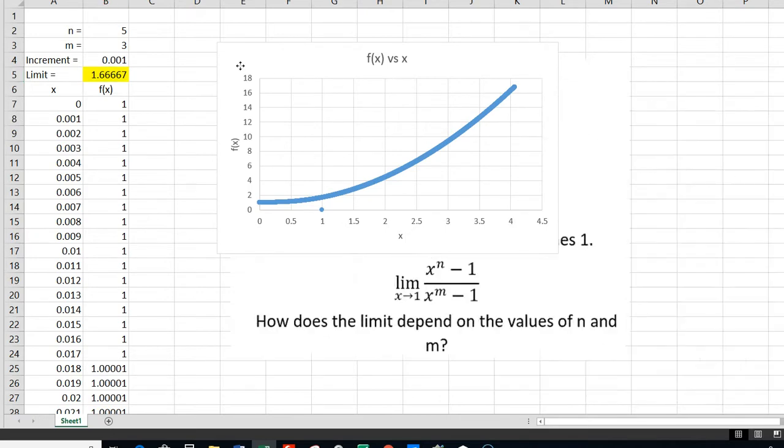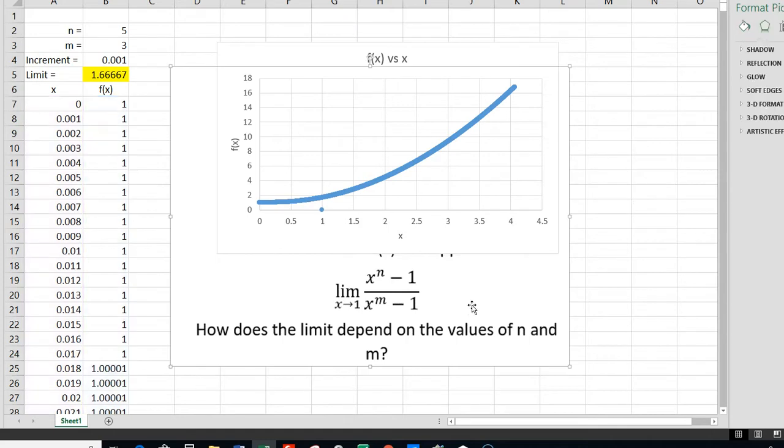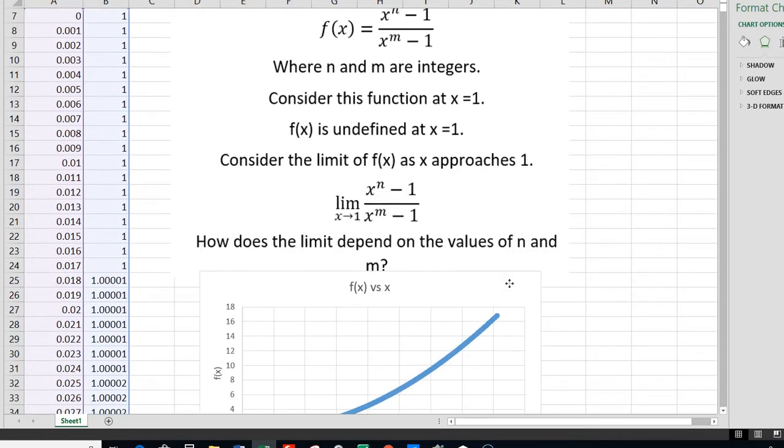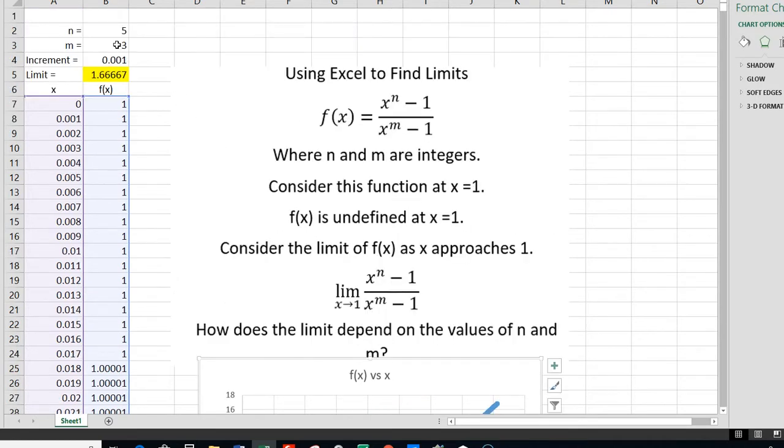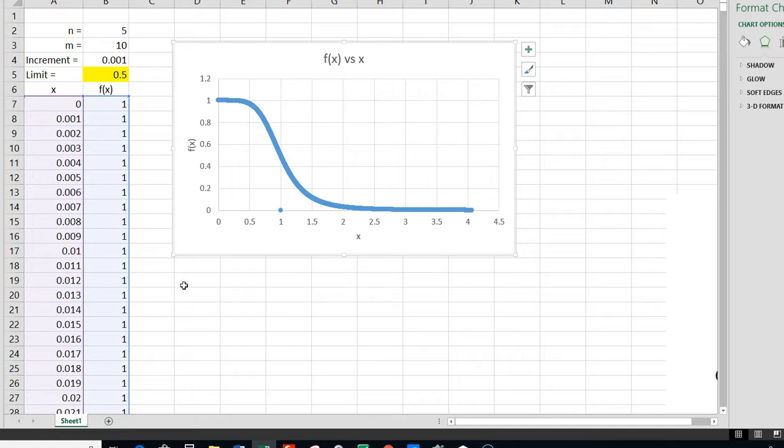So it looks as though the limit of f of x as x approaches 1 of x to the n minus 1 divided by x to the m minus 1 will always equal n over m. So we'll try just a couple more to make sure. We've got 5 and 3. Let's do 5 and 10. Well, 5 and 10 is 1 half, right? And we got 0.5. Let's see what the graph looks like. But again, it's 1 half. I think this is so cool. I really do. Math just gets me so excited. So you could do this with any function.